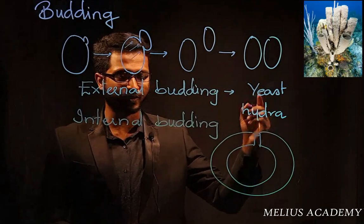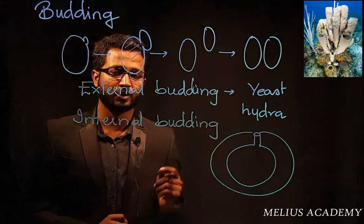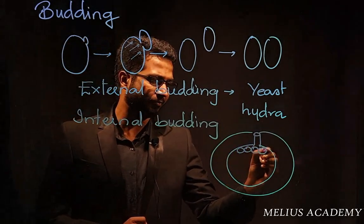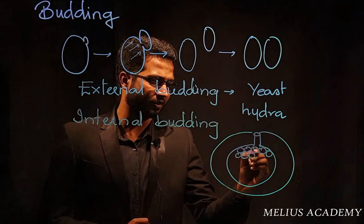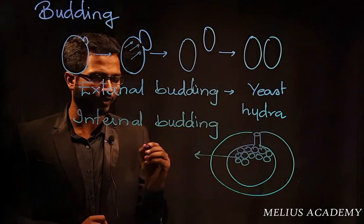You see the image over here. This is an organism called a sponge, belongs to the group called porifera. So multiple buds will develop within the body of sponges, and these internal buds are referred to as gemules.